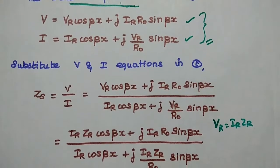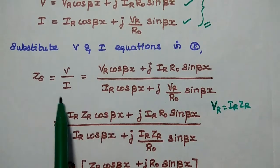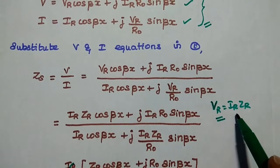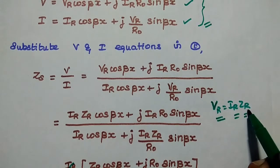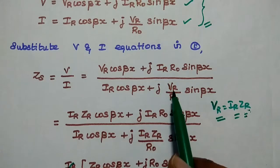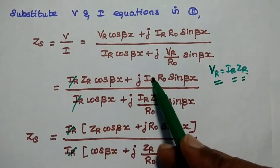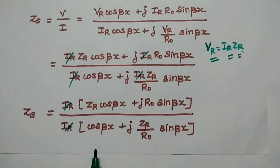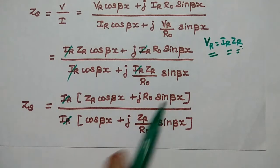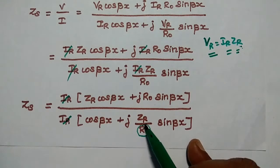In these two equations, we substitute for Zs. Zs, that is the input impedance, is equal to V by I. Substituting the V and I values and after further simplification, we can take IR outside and cancel the IR value.